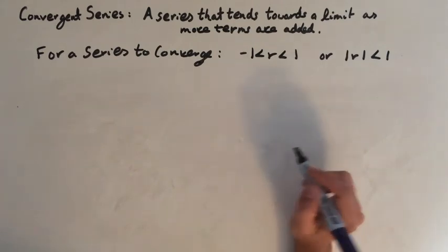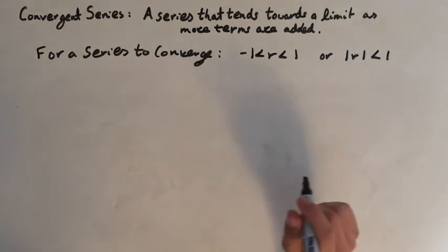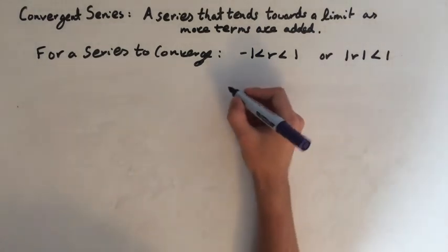This means that as we multiply consecutive terms they get smaller and smaller. So if you add them all together they're going to tend towards a limit. So I'm going to show you an example here.